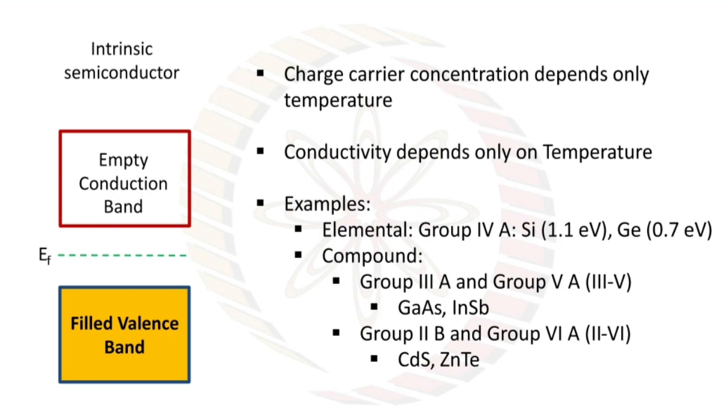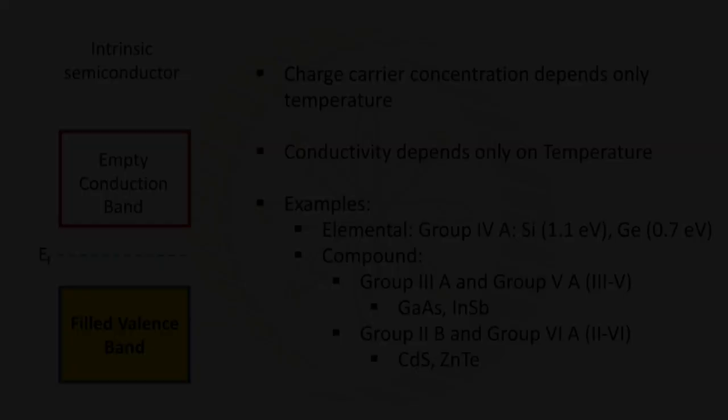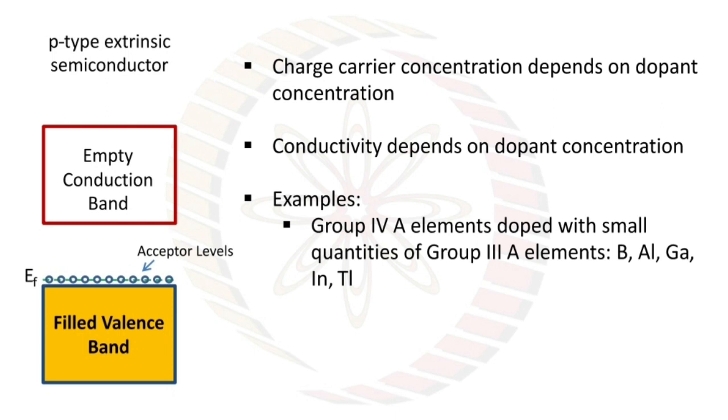For p-type semiconductor, charge carrier concentration depends on dopant concentration and conductivity depends on dopant concentration. Examples are group 4A elements doped with small quantities of group 3A elements, that is boron, aluminum, gallium, indium, and tellurium.